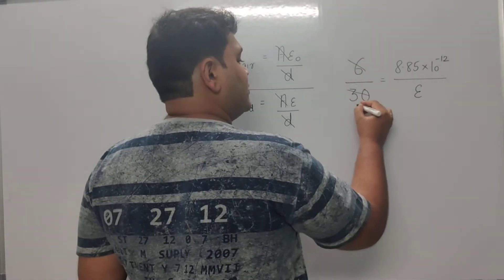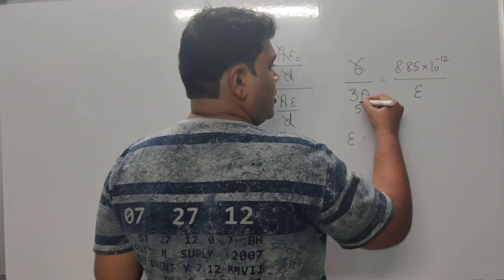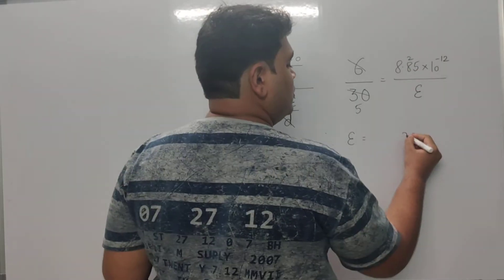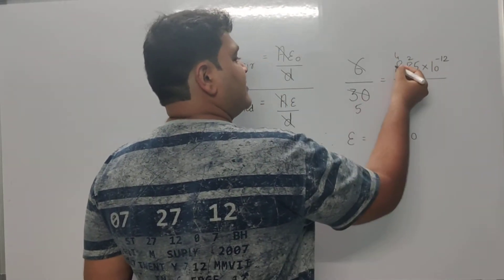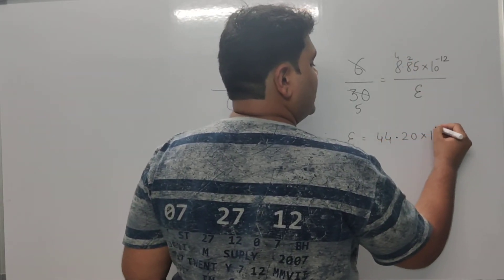This gives us 30/6 = 5. Multiplying by epsilon naught, we get epsilon as 5 × 8.85 = 44.25, so 44.2 × 10^-12.